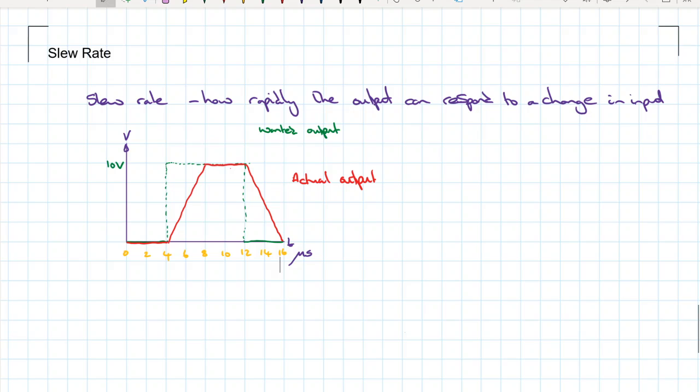So what we got then is this actual output. Instead of going straight up, our output can't respond quick enough, so we get this line here. If we wanted to then, we could work out what our slew rate is.